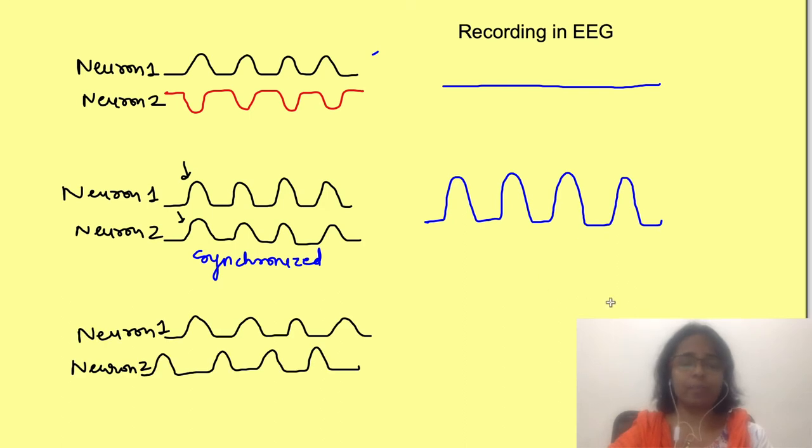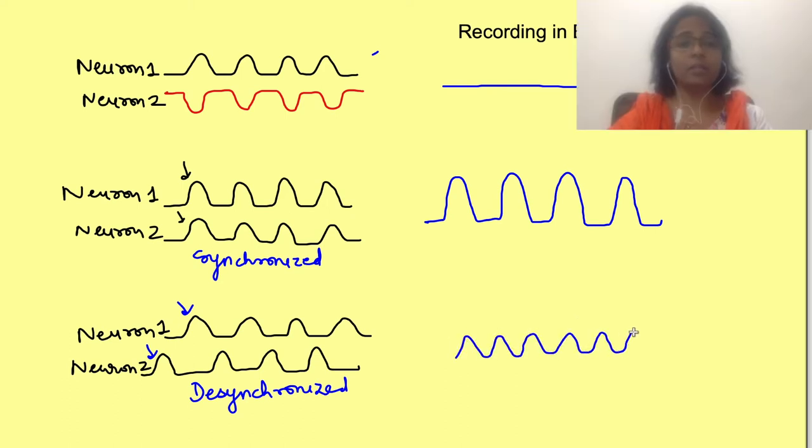But in this other example, excitation is similar but it is not happening at the same time, or it is desynchronized. There is adding up of potential but the amplitude has not increased. Instead, frequency of recorded waves has increased.